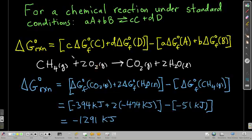When you look up these numbers, delta G zero formation of everything, plug them in, and this gives delta G zero of reaction as negative 1291 kilojoules. What does that tell us? It tells us that under standard conditions, this reaction is spontaneous in the direction written.